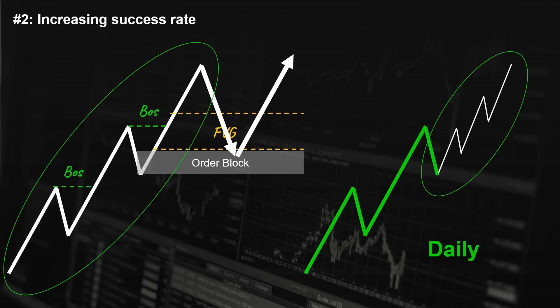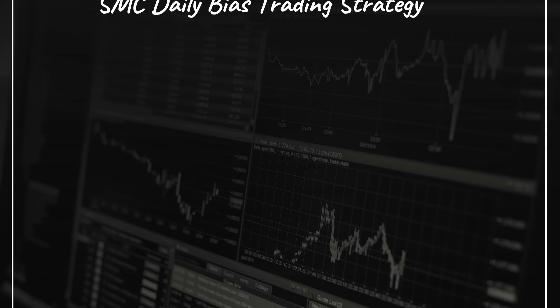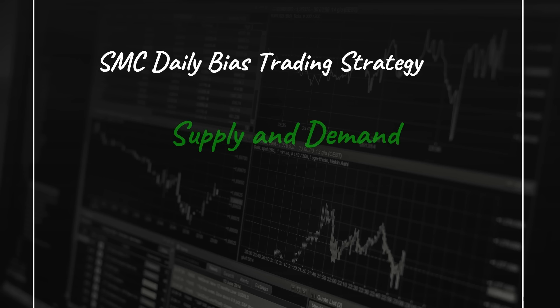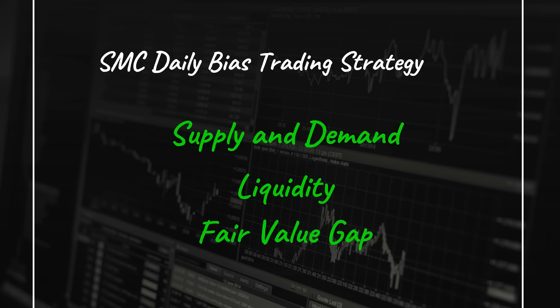Now that you understand the fundamentals, let me show you how to determine the daily bias using smart money concepts. We use three major concepts in identifying the daily bias: supply and demand levels, liquidity areas, and fair value gaps. We're going to use a combination of all the information to determine the next moves in the market.